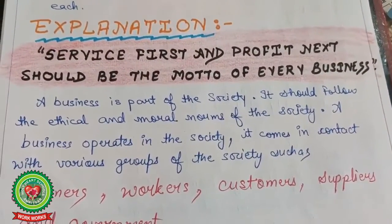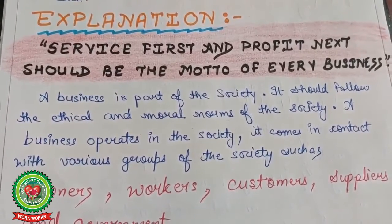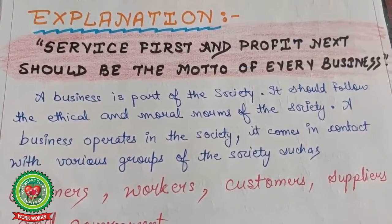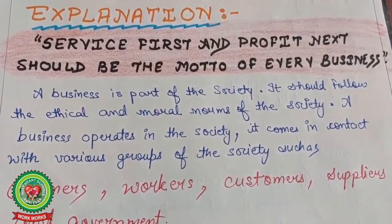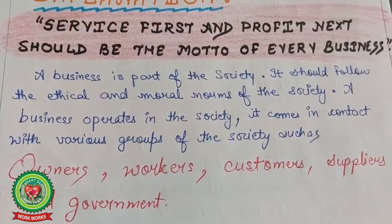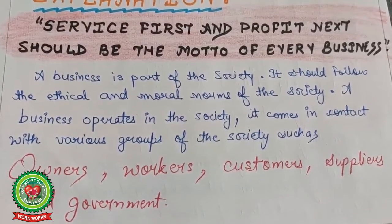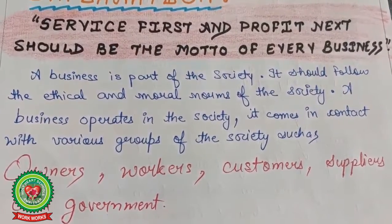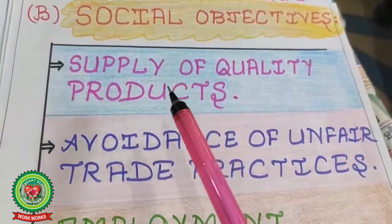Now the social objectives explanation. Service first and profit next should be the motto of every business. In modern business, firstly serve, then earn profits. A business is a part of society; it should follow the ethical and moral norms of the society. A business operates in the society and comes in contact with various groups such as owners, workers, customers, suppliers, and government.